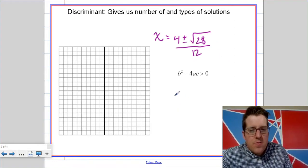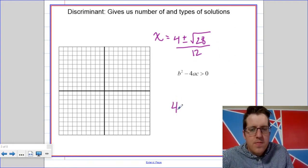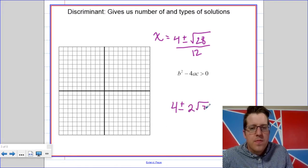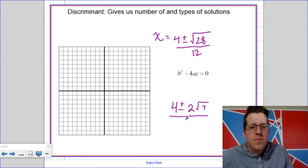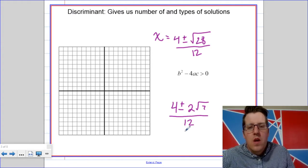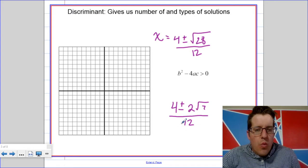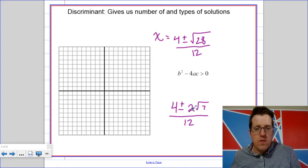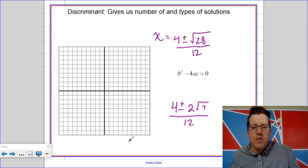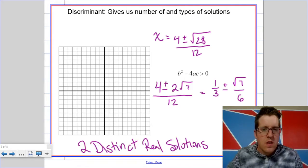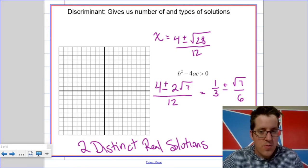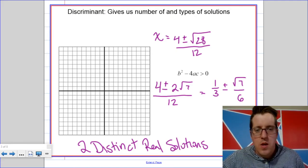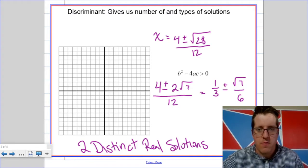So, when the discriminant is positive, we're going to simplify. And when we do that, what we're going to get are two real solutions, two different real solutions. In this case, our answers happen to be one-third plus root 7 over 6, and one-third minus root 7 over 6.